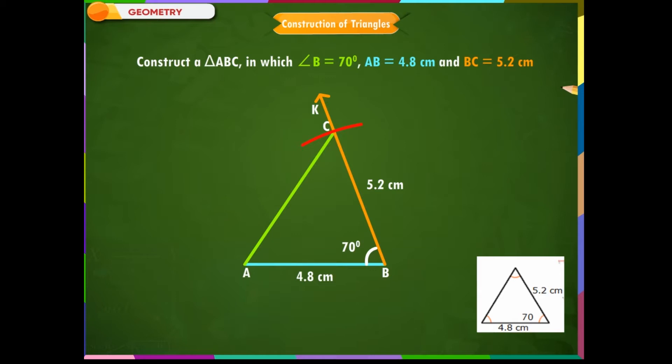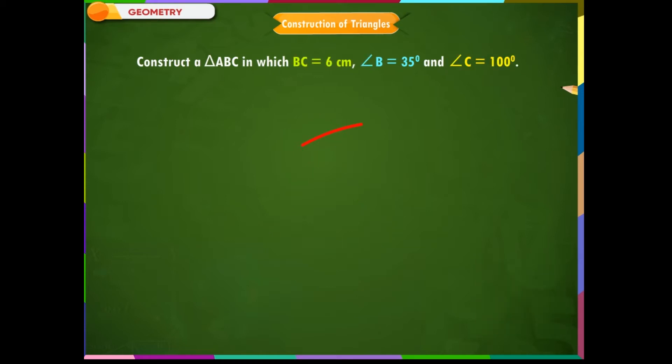Construction of triangle when measures of two angles and the length of the included side. Let us construct a triangle ABC in which BC is equal to 6 cm, angle B is equal to 35 degrees, and angle C is equal to 100 degrees.